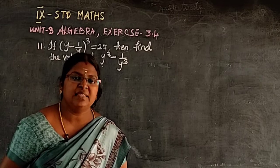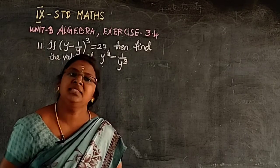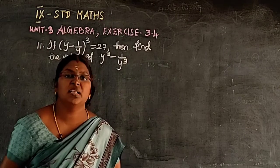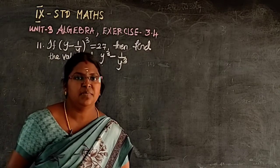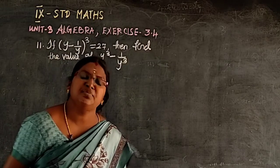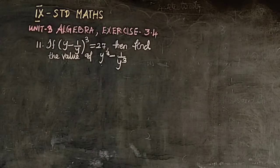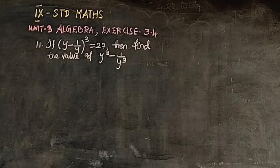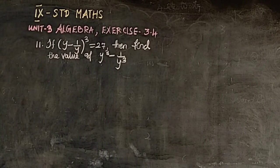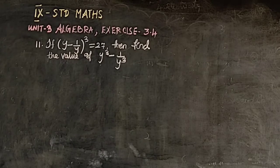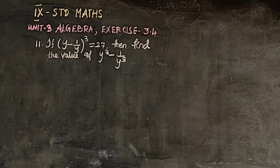Welcome to our math class. This is 9th standard math, Unit 3 Algebra, Exercise 3.4, sum number 11. If (y - 1/y)³ = 27, then find the value of y³ - 1/y³.